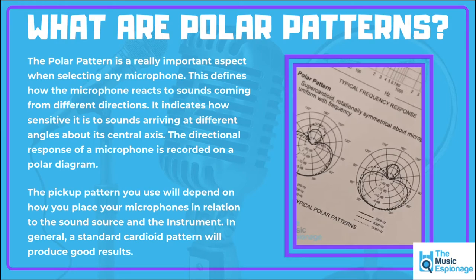You'll often see on the back or in the specifications for any microphone these polar pattern graphs. These are circular diagrams with the microphone tracked around that circle. At point zero at the bottom, that's the microphone on axis pointing at the sound source, so naturally that's going to be at its loudest. The microphone is then played a frequency — for example, 1000 Hz.